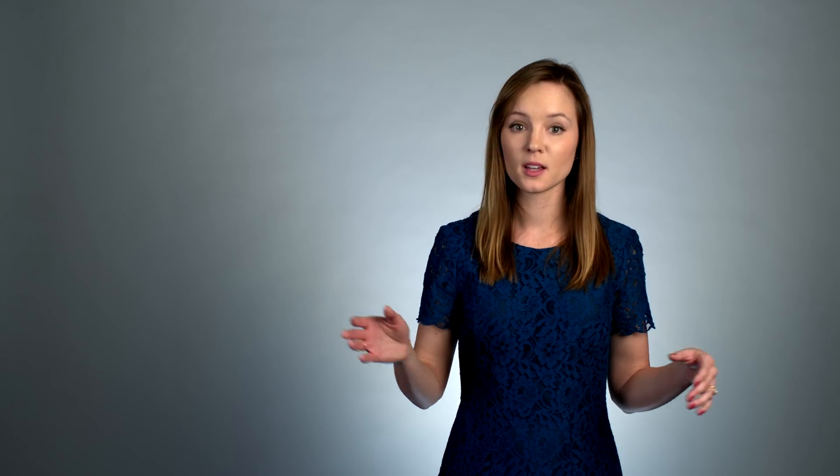The weak signifier versions had broader, more outspread distributions of fixations. So, for example, here are the two heatmaps for the jewelry e-commerce pages that we just saw a close-up of. On the left, in the strong signifier heatmap, we can see most of the red areas are focused around the pearl heading and the pearl link. We can see more red areas, which indicate the most and longest fixations, spread out further in that weak version.